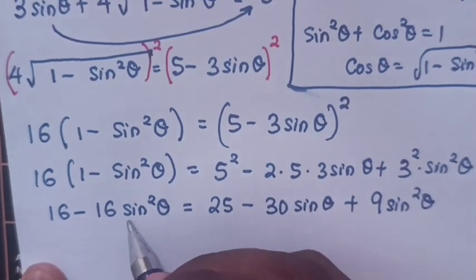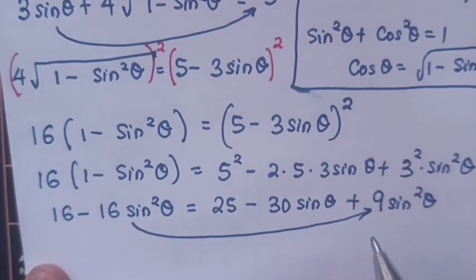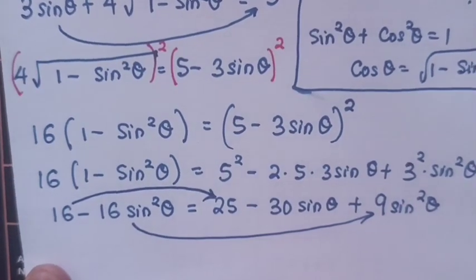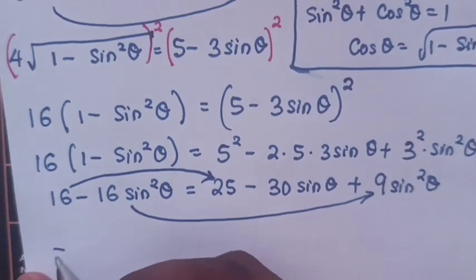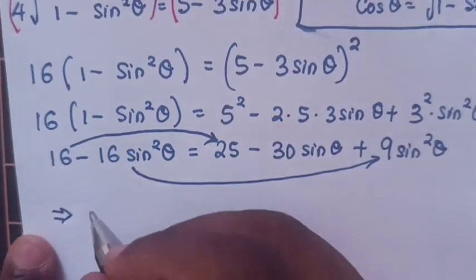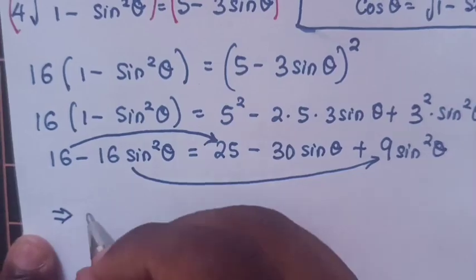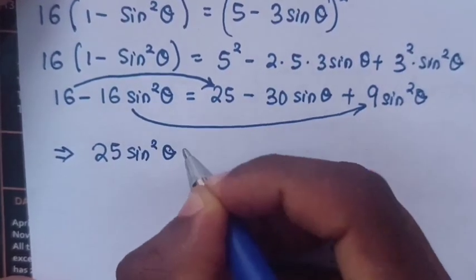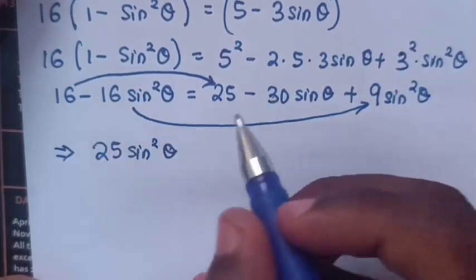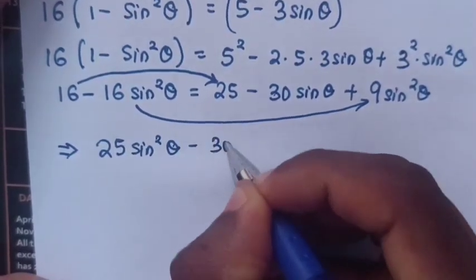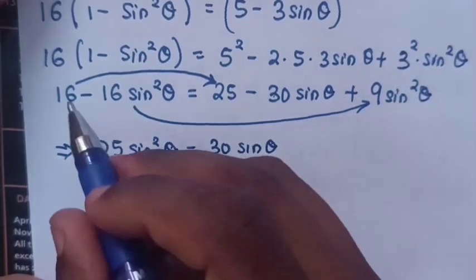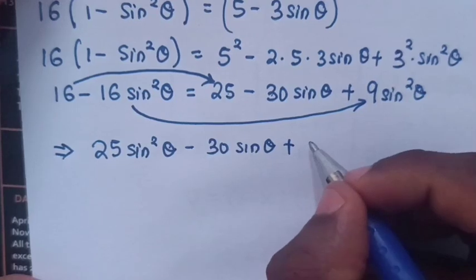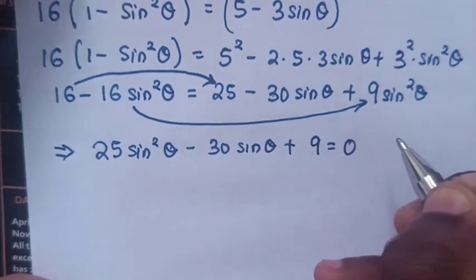Next, we move all terms to one side. So 9 sin²θ + 16 sin²θ = 25 sin²θ, minus 30 sin θ, and 25 − 16 = 9, giving us 25 sin²θ − 30 sin θ + 9 = 0.